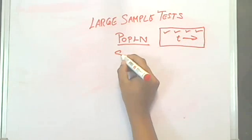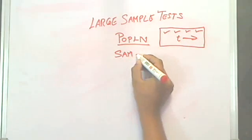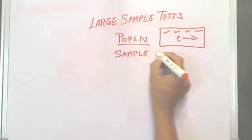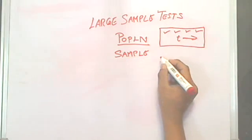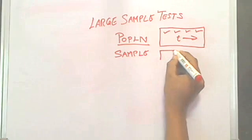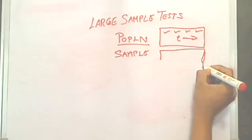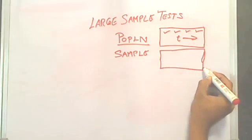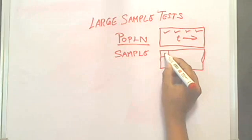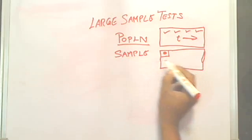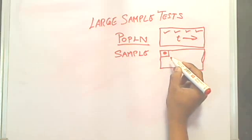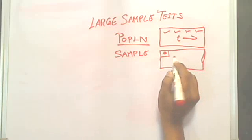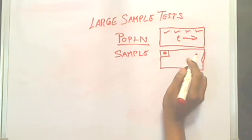Instead, what you do is take a sample of this population. Rather than taking the whole thing, you end up taking a small part of it — you study only that much. This makes your research so much easier, and this is what you do when you do statistical large sample tests.